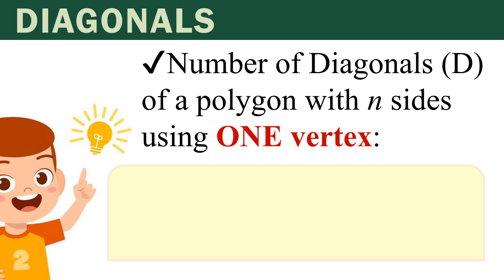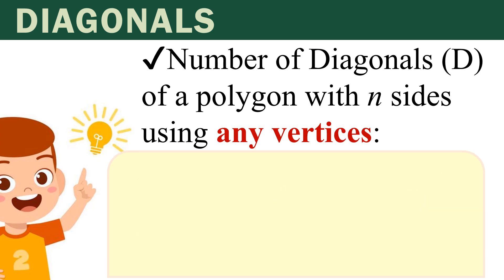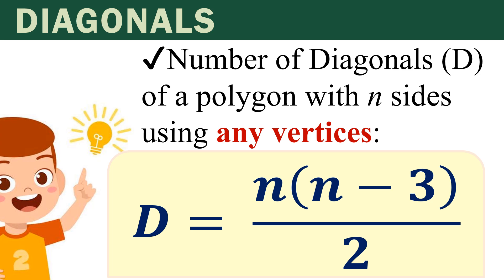The number of diagonals of a polygon with n sides using one vertex — this is our formula. For the number of diagonals of a polygon with n sides using any vertices, the formula is: D equals n times (n minus 3), all over 2.